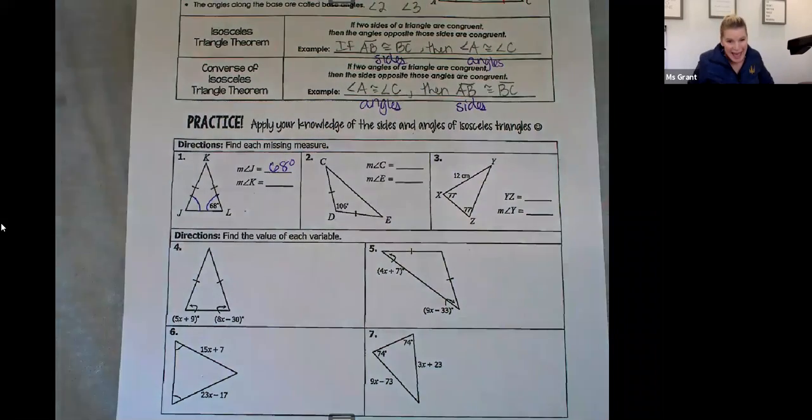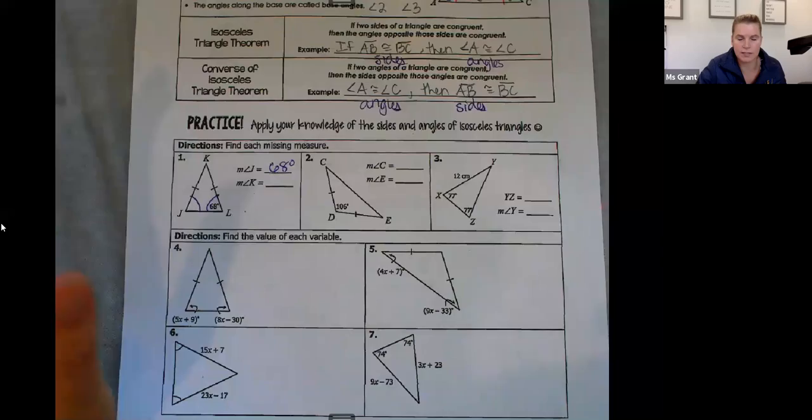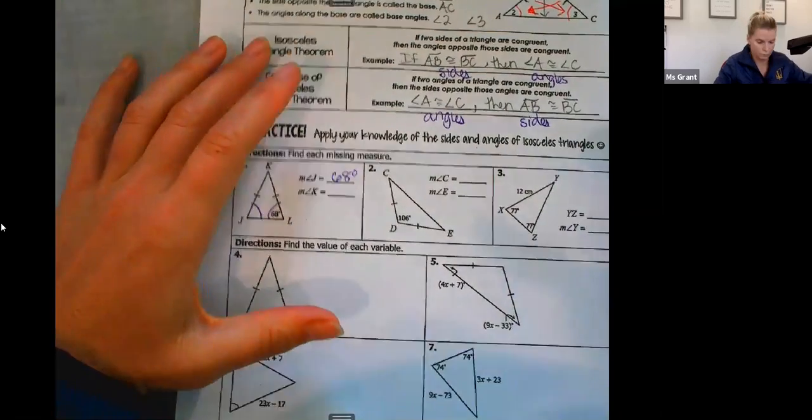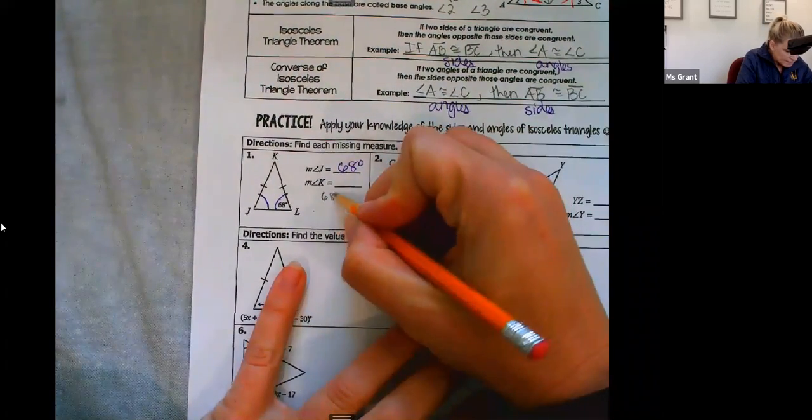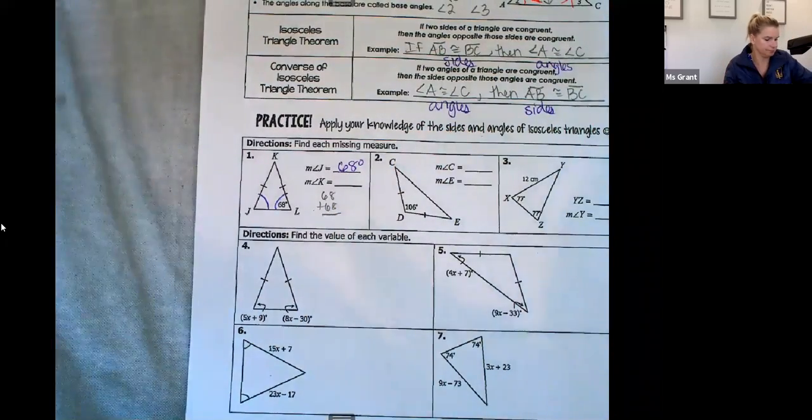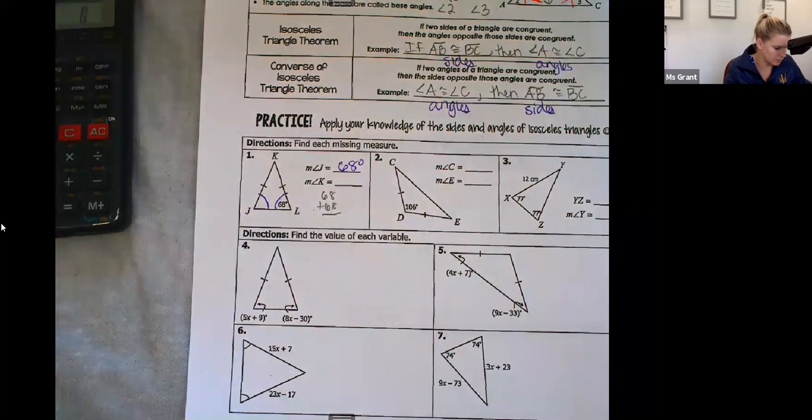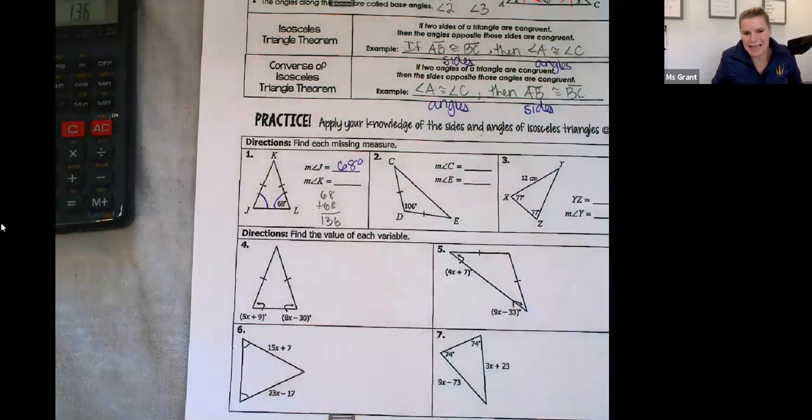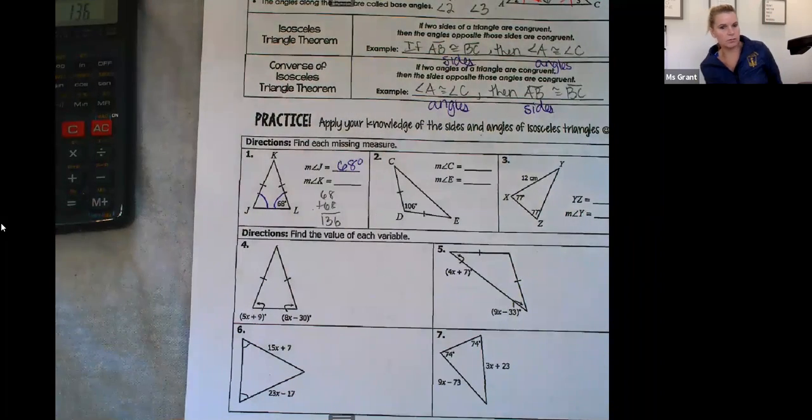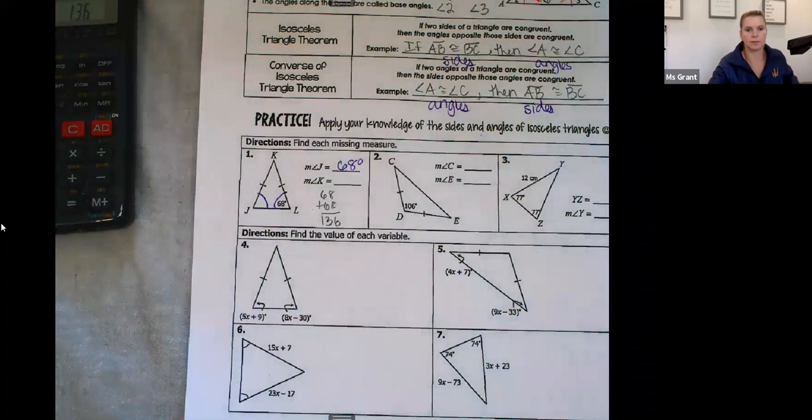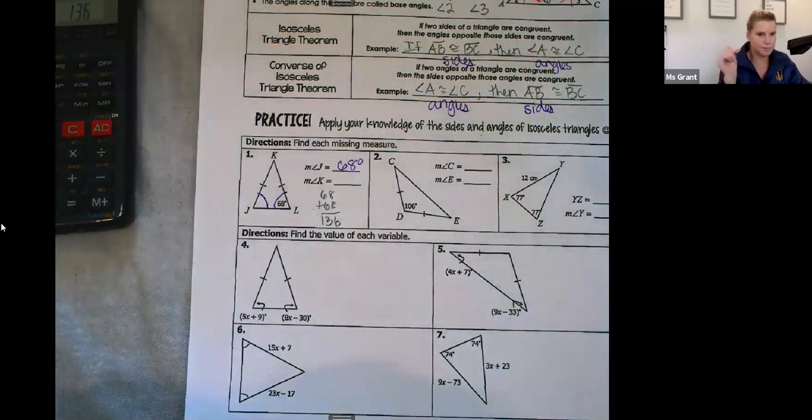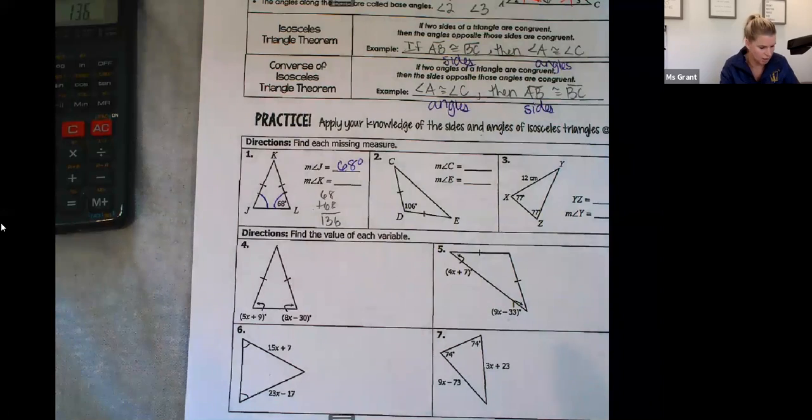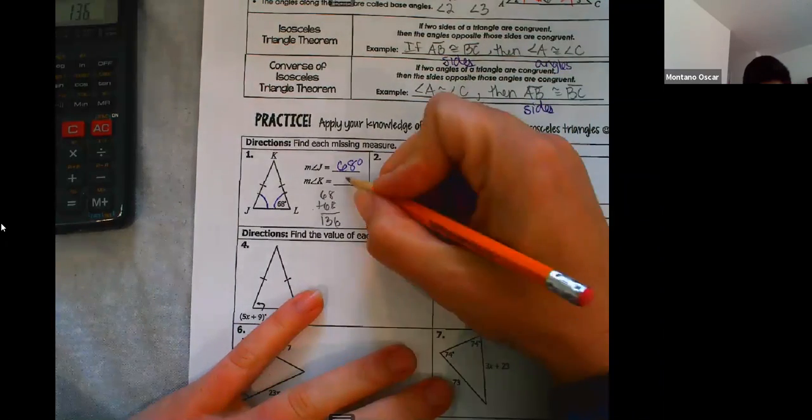Now angle K. All three angles in a triangle add up to 180. So I've got 68 plus 68. So this whole worksheet, guys, you're going to need a calculator. So that's 136. Now I have a missing side, an unknown, the top angle. What's the top angle? 44 degrees. The whole thing adds up to 180. 44 degrees.